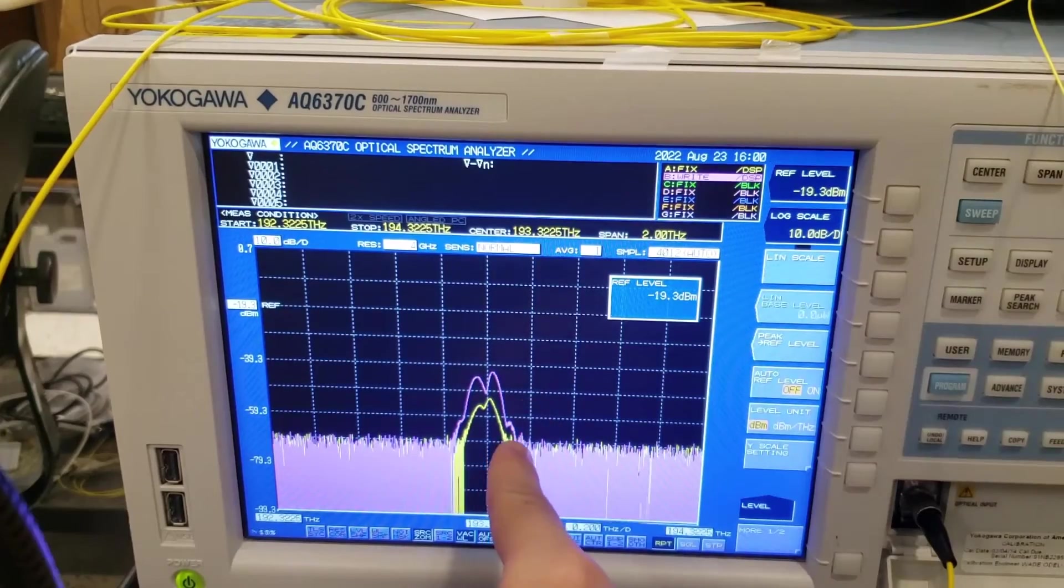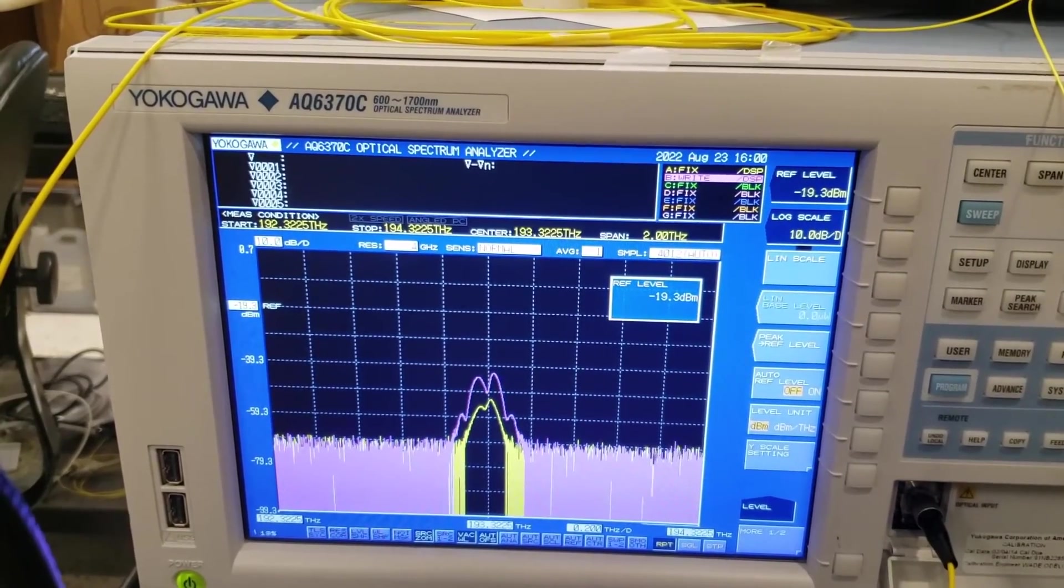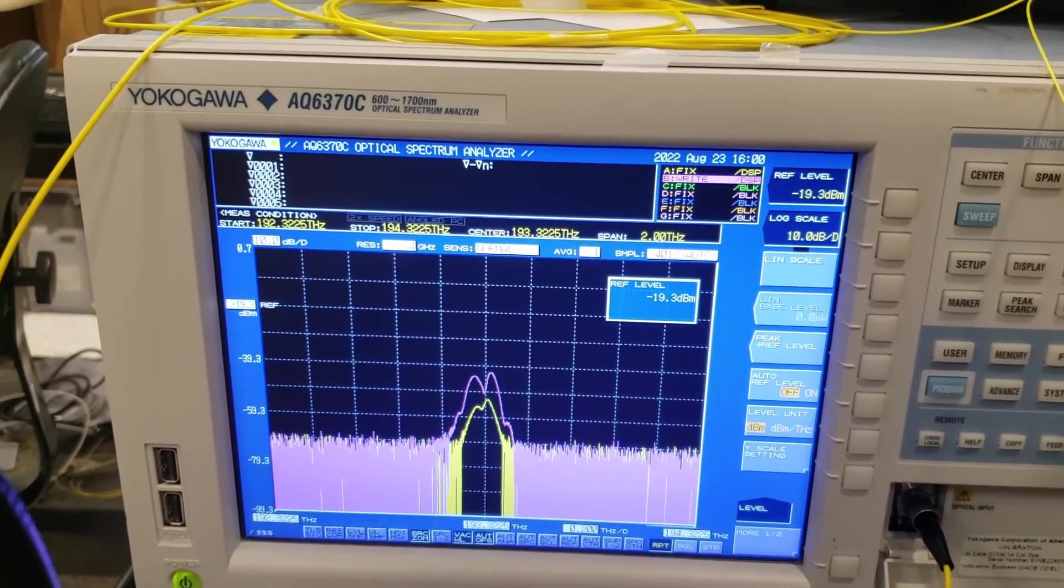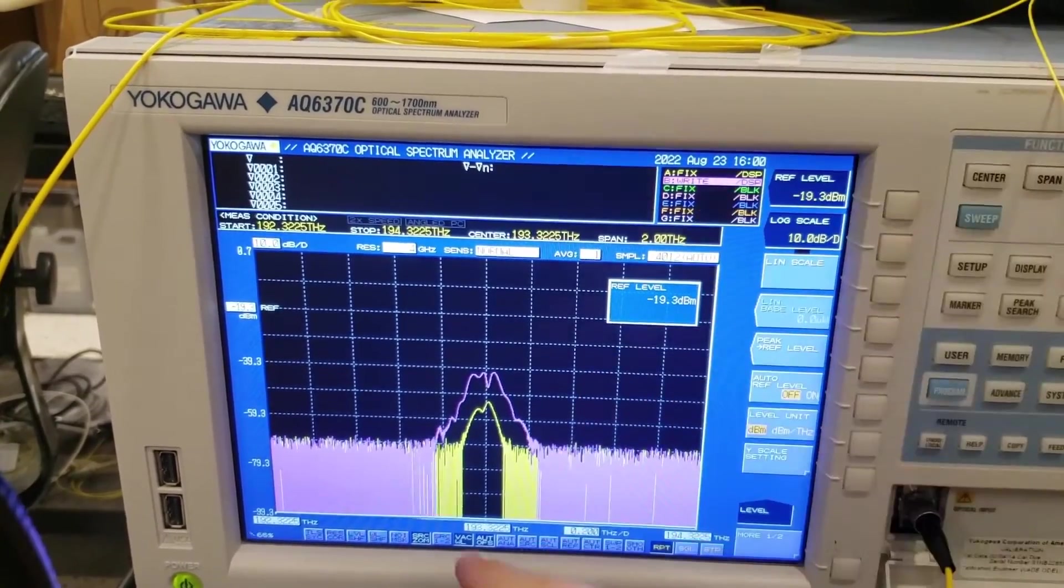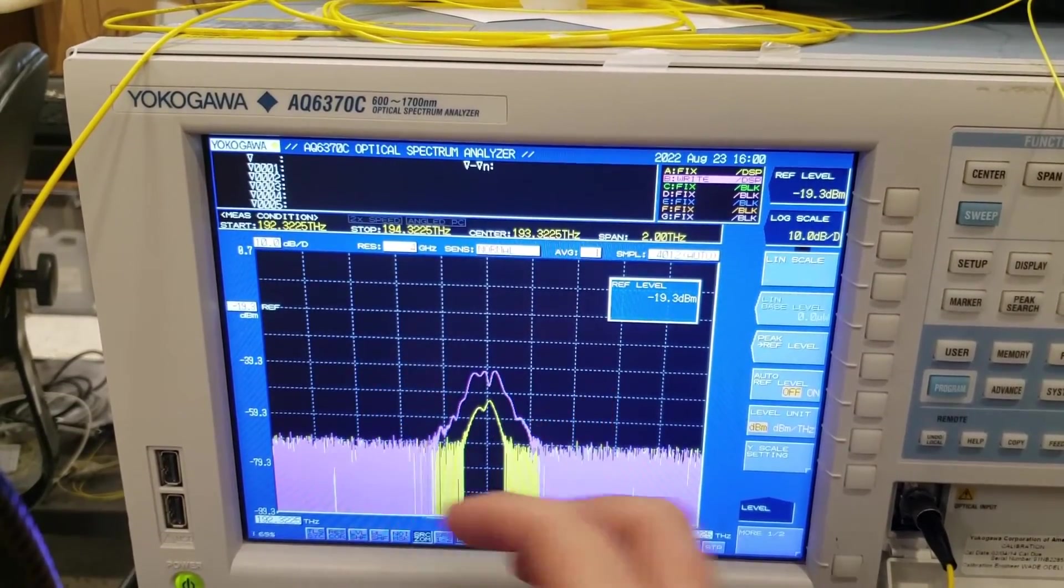So now we can maybe see something starting to happen right here. So this is indicating to us that the peak power and therefore the slope of the power of the pulse is large enough for significant self-phase modulation to occur and therefore for the spectrum to increase in width.